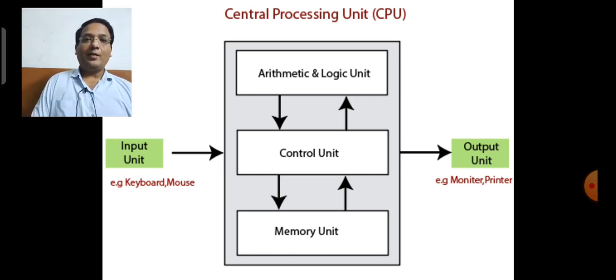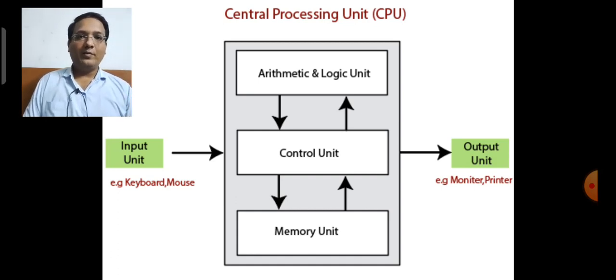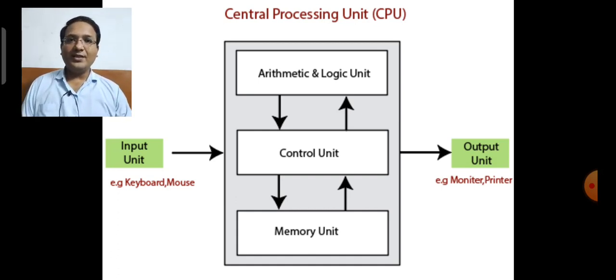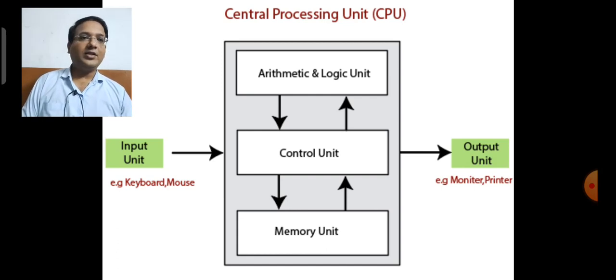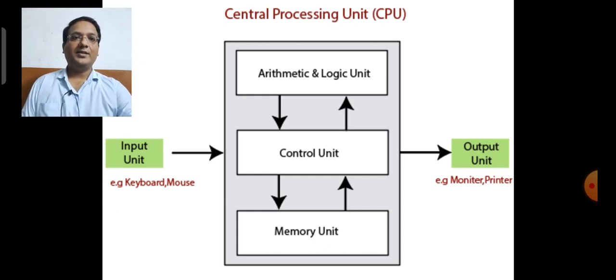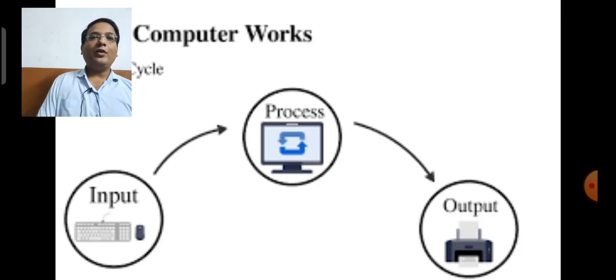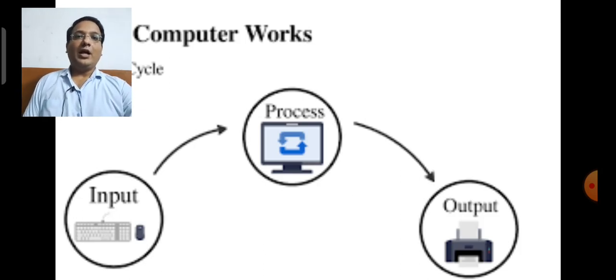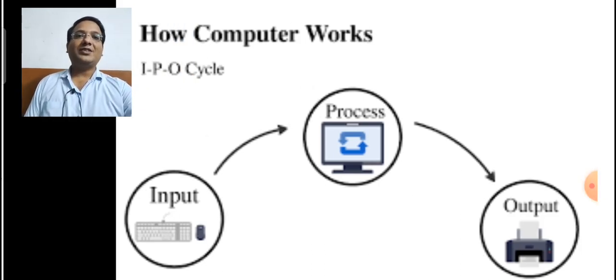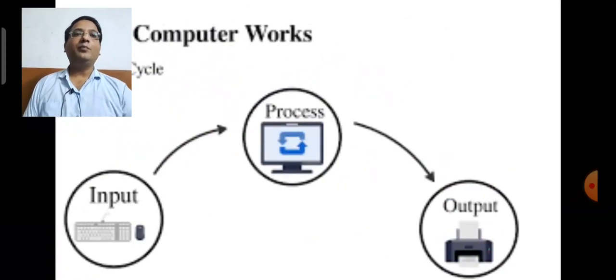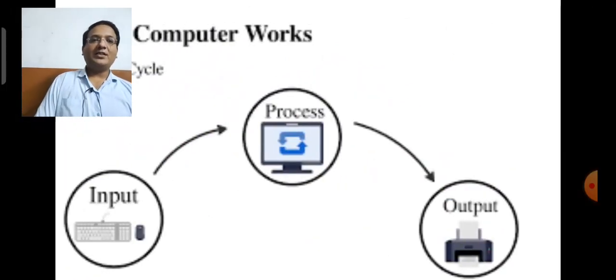We can say that a computer takes input from the keyboard and mouse, CPU processes it, and it generates output on the output screen like monitor. We can say that computer works on an input-process-output cycle, that is IPO cycle.